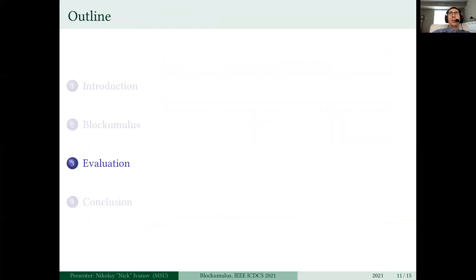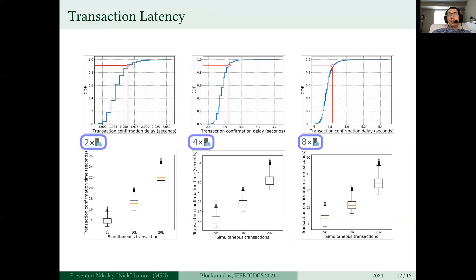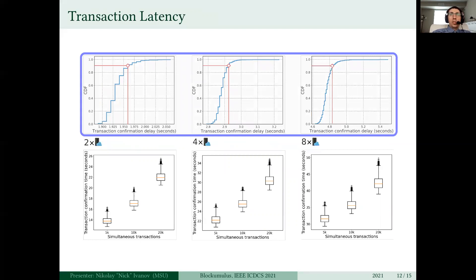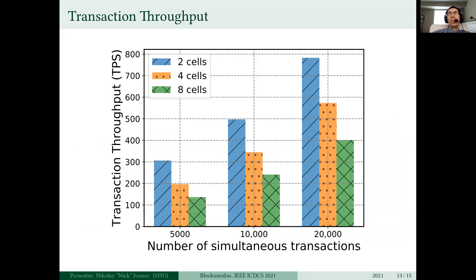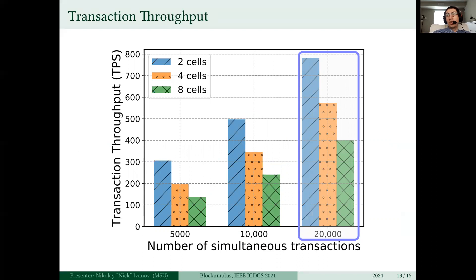Now let's see how well Blockumulus performs in the real world. We tried three deployment profiles with two, four, and eight cells. Under normal load, as we can see, the latency of execution of one transaction is just a few seconds — many times faster than traditional blockchains. And under stress tests with tens of thousands of transactions, we see that Blockumulus also achieves very fast execution and allows to execute all those transactions within one minute. Also, we observe a bulk discount effect in which the more transactions we submit, the higher the transaction throughput is. This is because of various optimizations in routing, caching, and parallel execution.